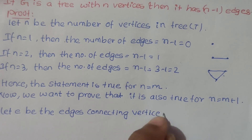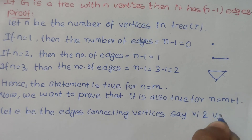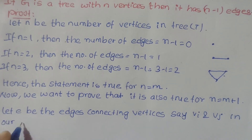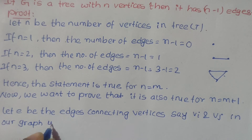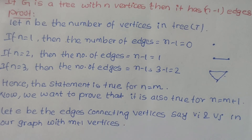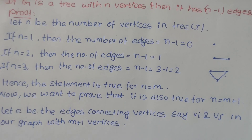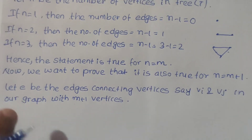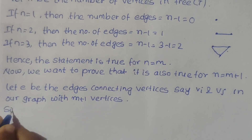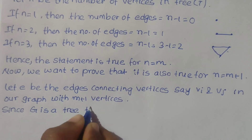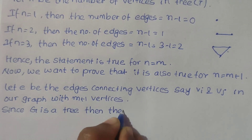Now in our graph with m plus 1 vertices, let us suppose we connect vertex vi and vertex vj with an edge e.